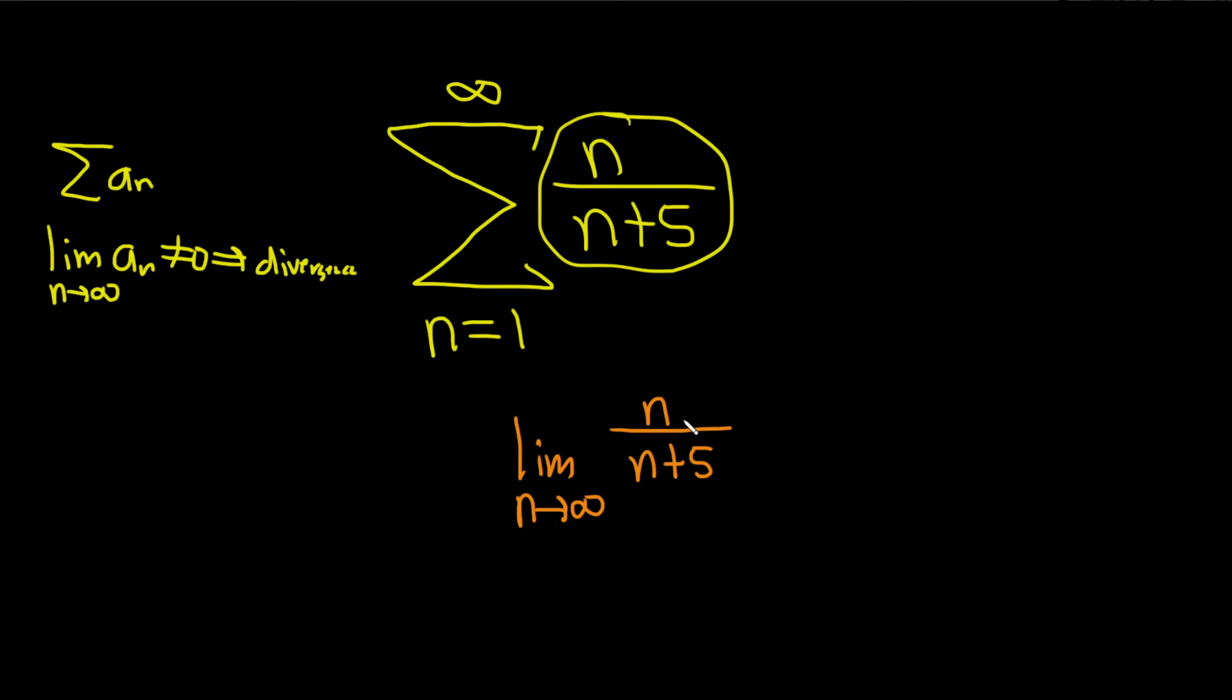So this limit is going to be 1 and I know that because this is to the first power and this is to the first power. So they both have the same growth rate. And so whenever that happens,